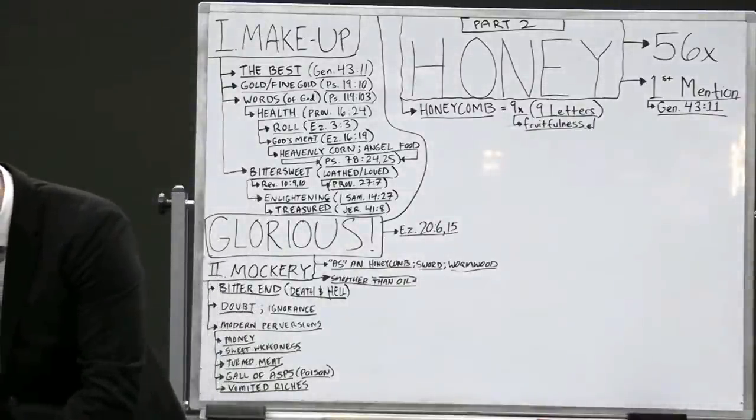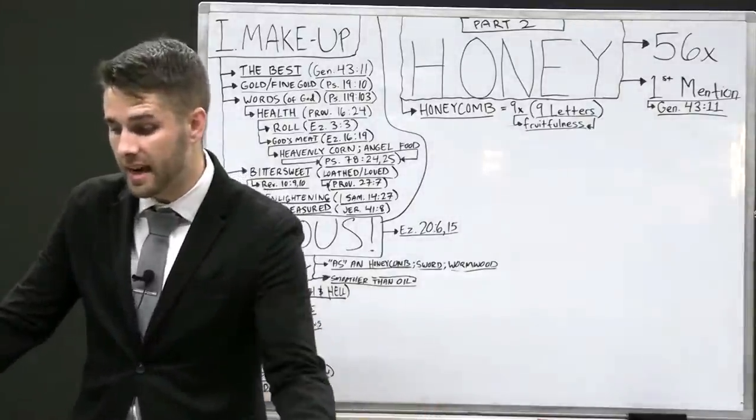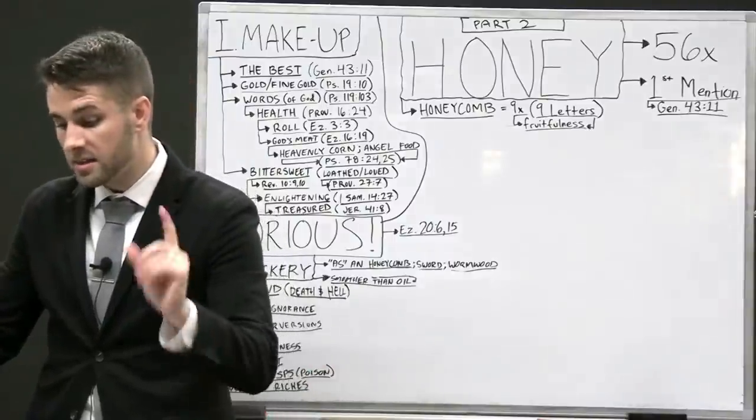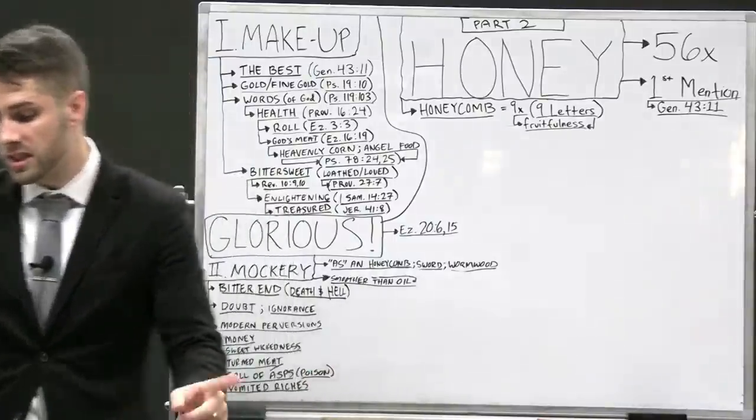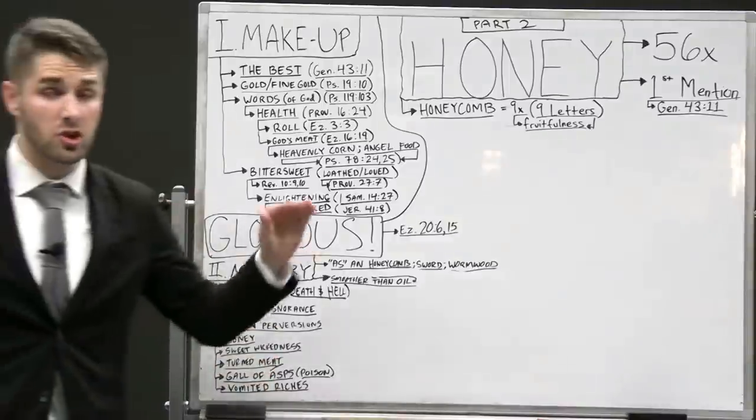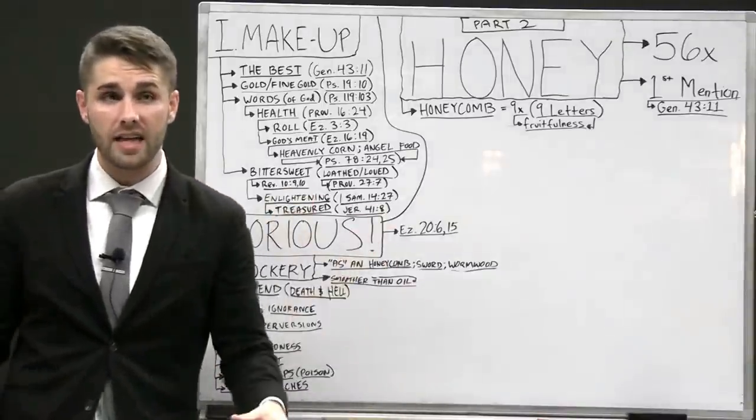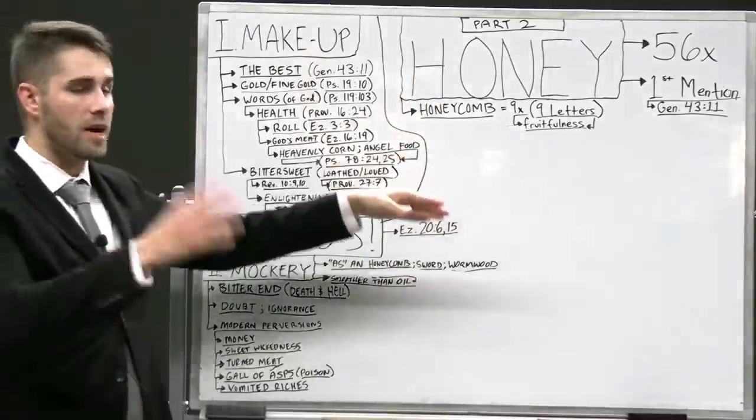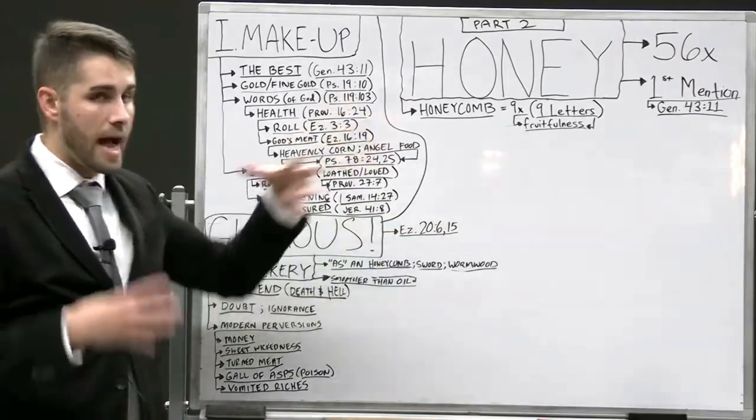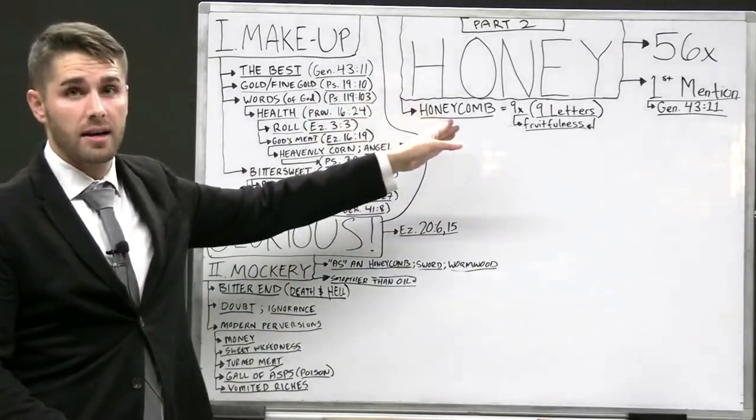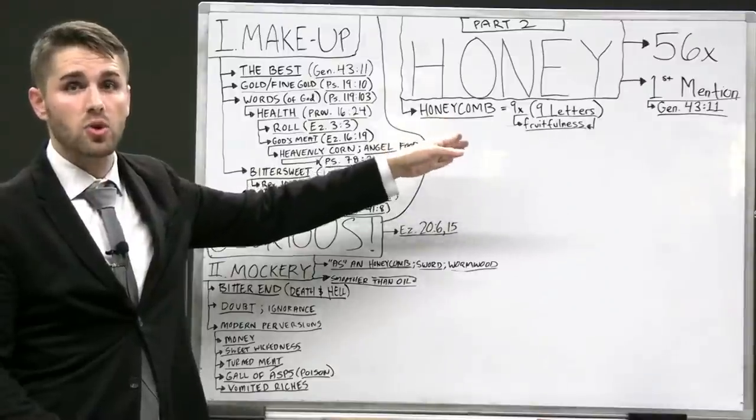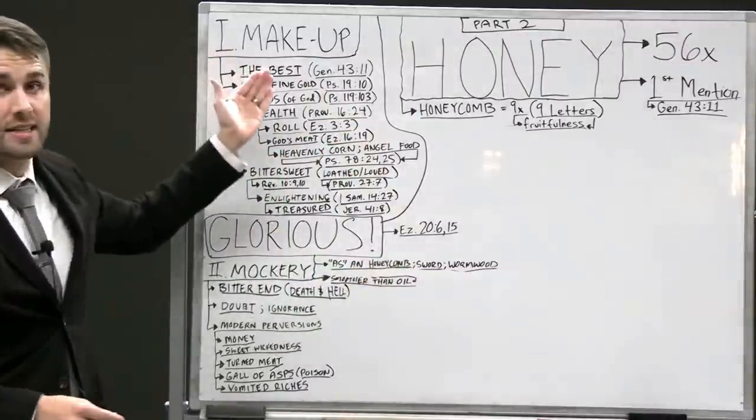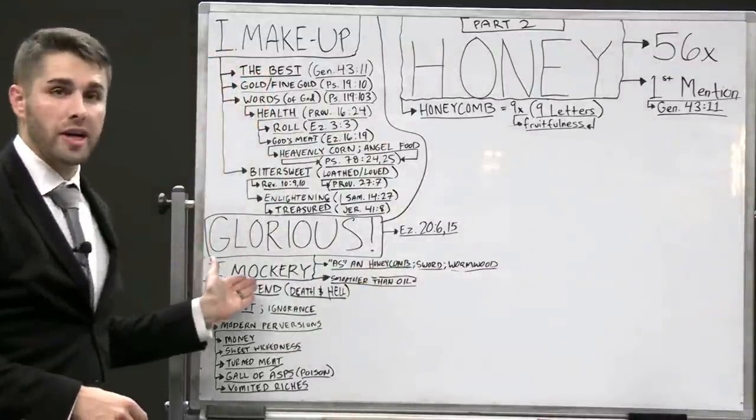In Ezekiel 3, it's called a roll. In Ezekiel 16, it's referred to as God's meat. In Psalm 78, it's referred to as the corn of heaven and angels' food when it's talking about that manna. In Revelation 10, it is bittersweet. The words of God are bittersweet. Proverbs 27:7, it's loathed by the full soul, but it's loved by the hungry. Even the bitter things of the Bible are sweet to a hungry soul.